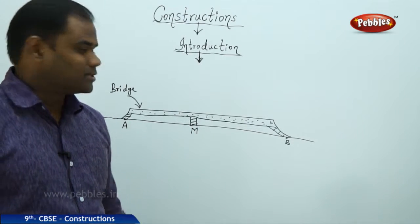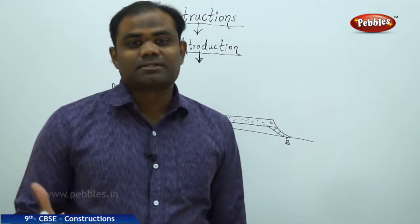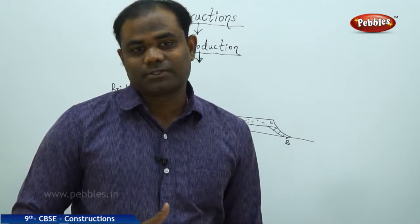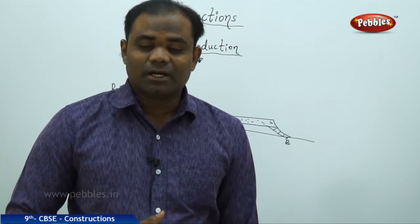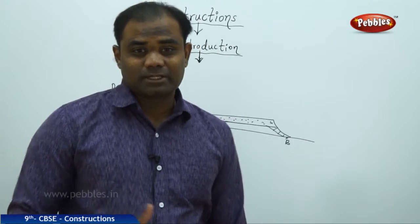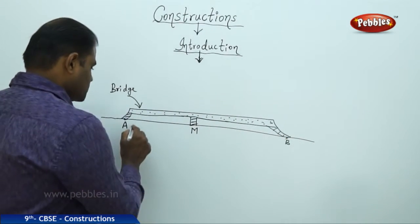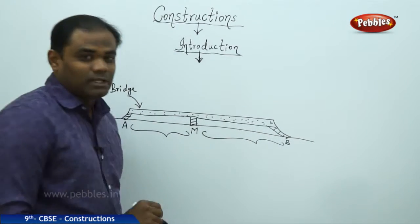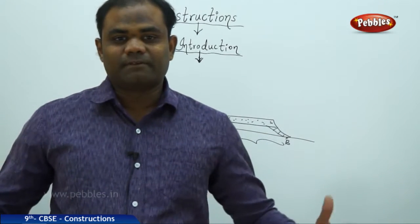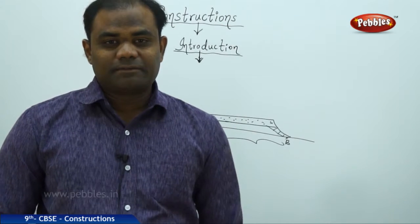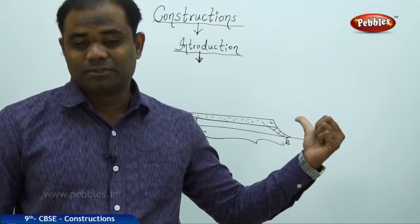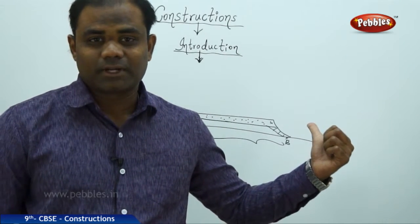We use this real life problem as a base to understand the topic of constructions. So let's see how the engineer has come successfully by building the three pillars exactly at equal distances so that the bridge stands perfect. A real life situation of a bridge which uses the knowledge of constructions.